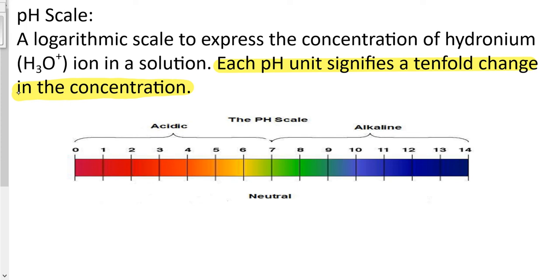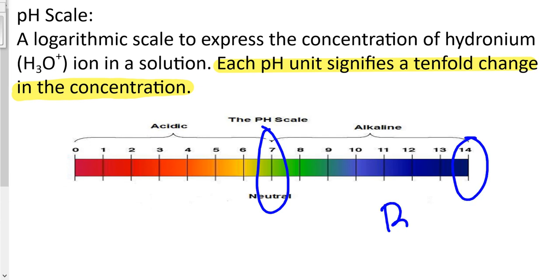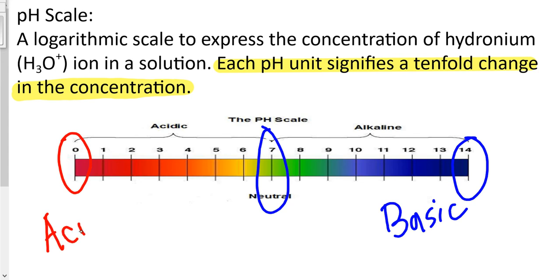In this picture, we have a pH scale which goes from 0 to 14. Seven is the neutral point. If any solution has a pH of 7, that means it's fairly neutral. A solution that has a pH of 14 is highly basic, and a solution that has a pH of 0 is highly acidic. So: 7 is neutral, 0 is acidic, and 14 is basic.